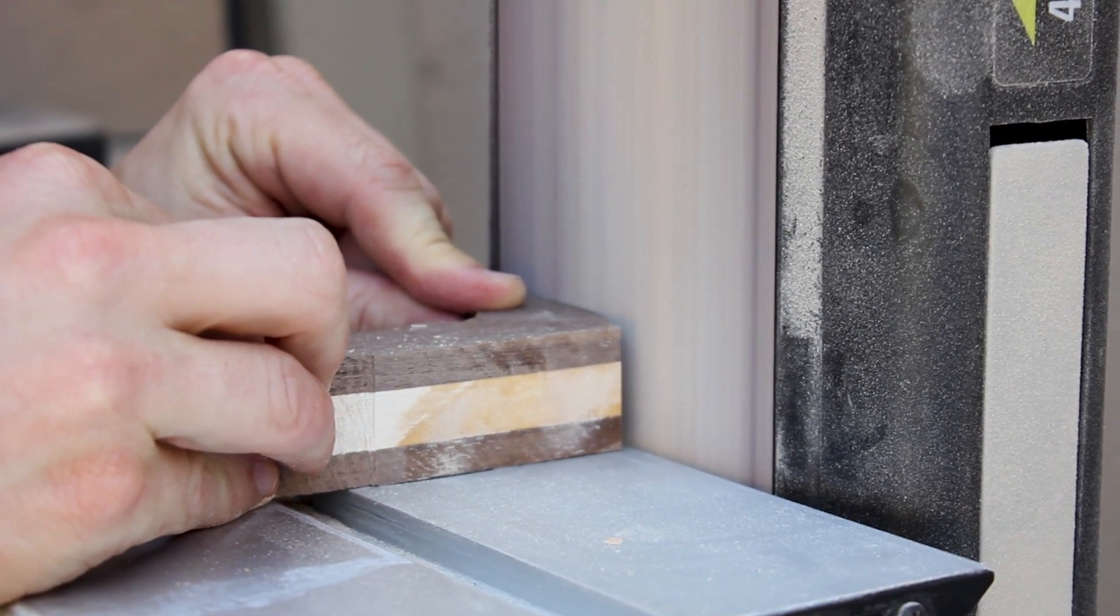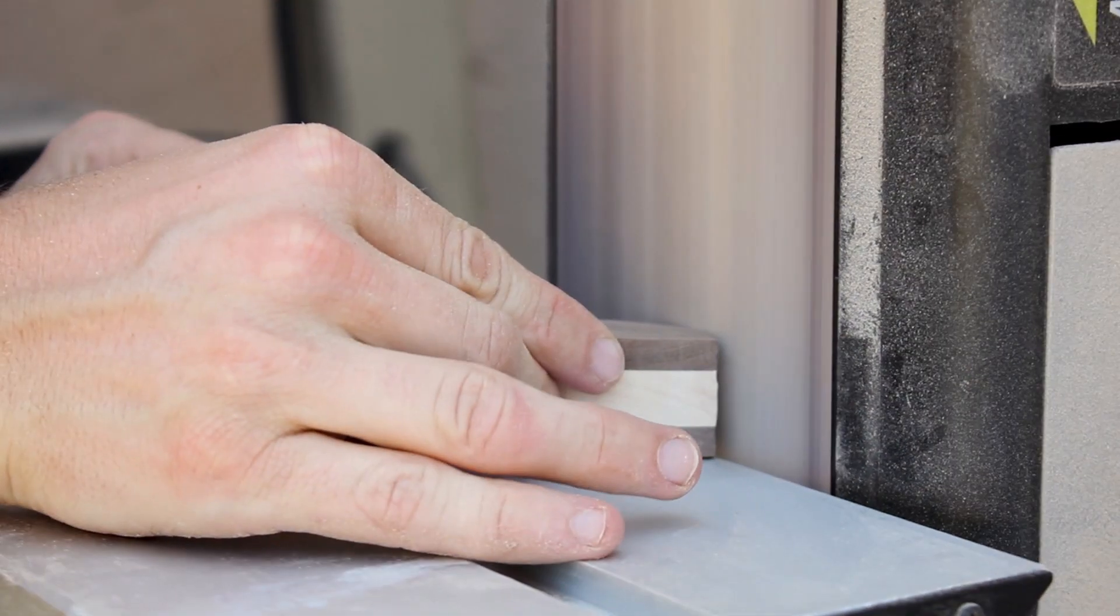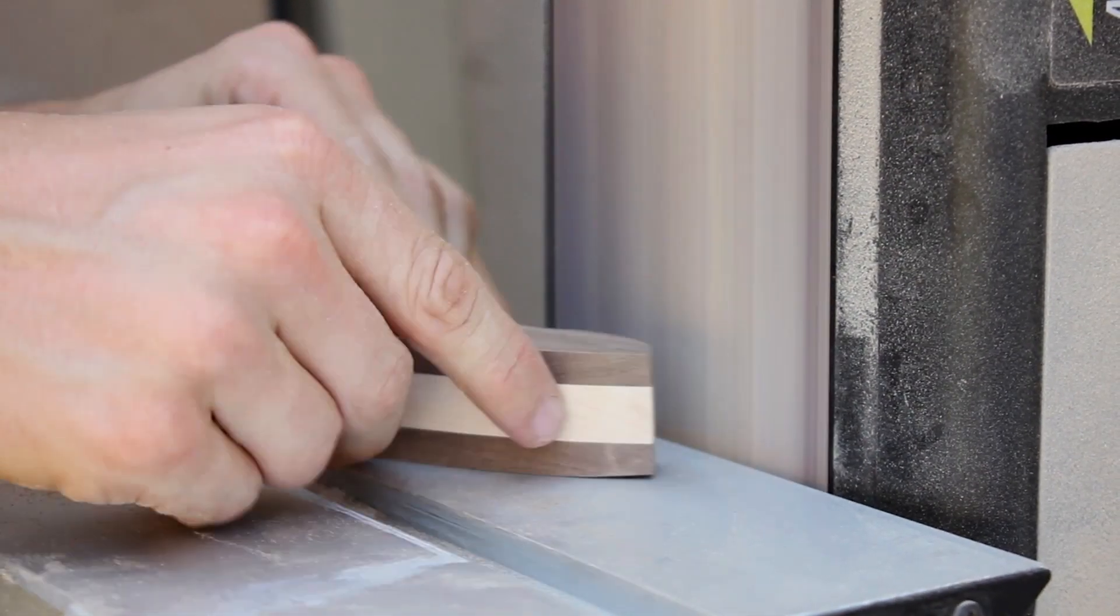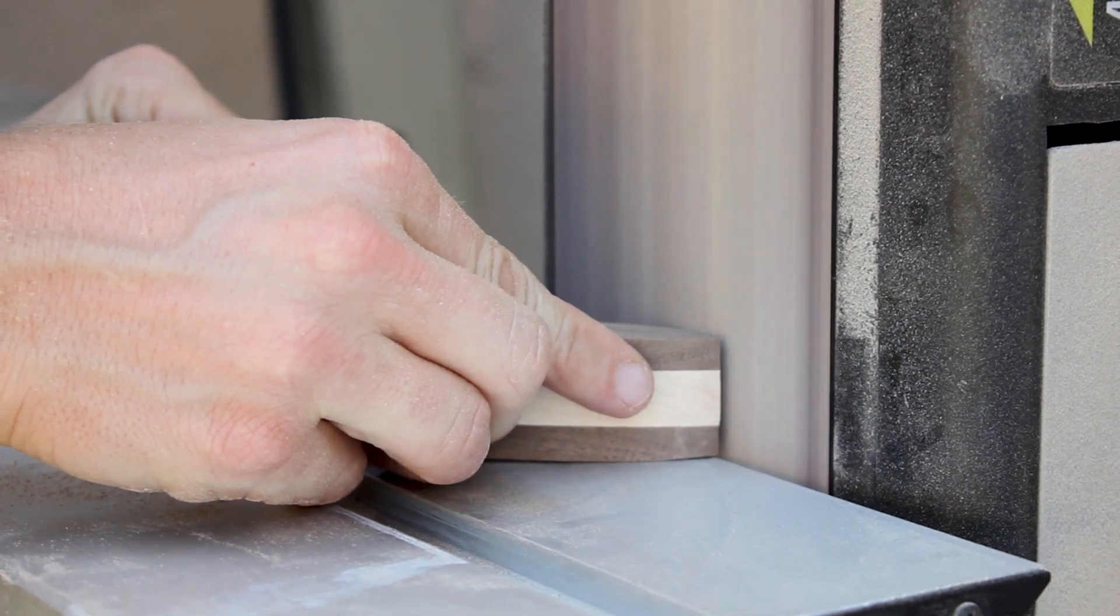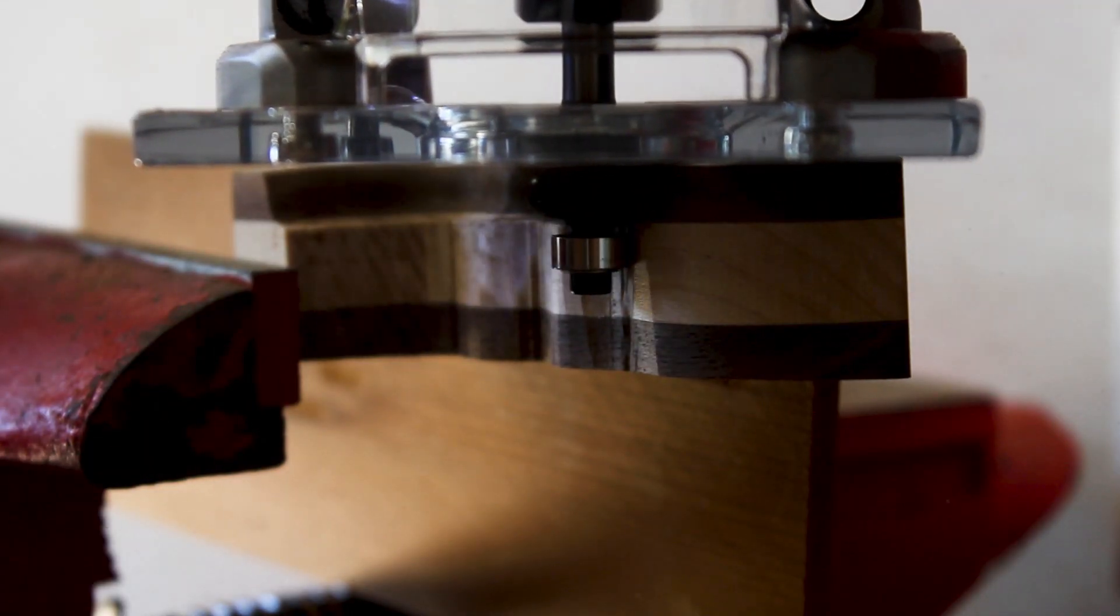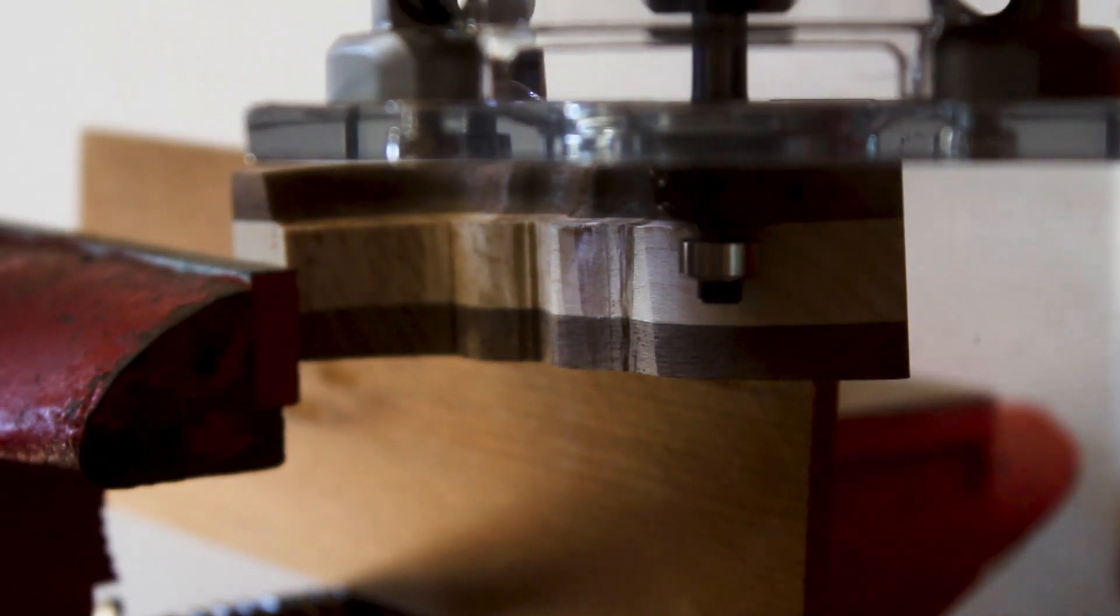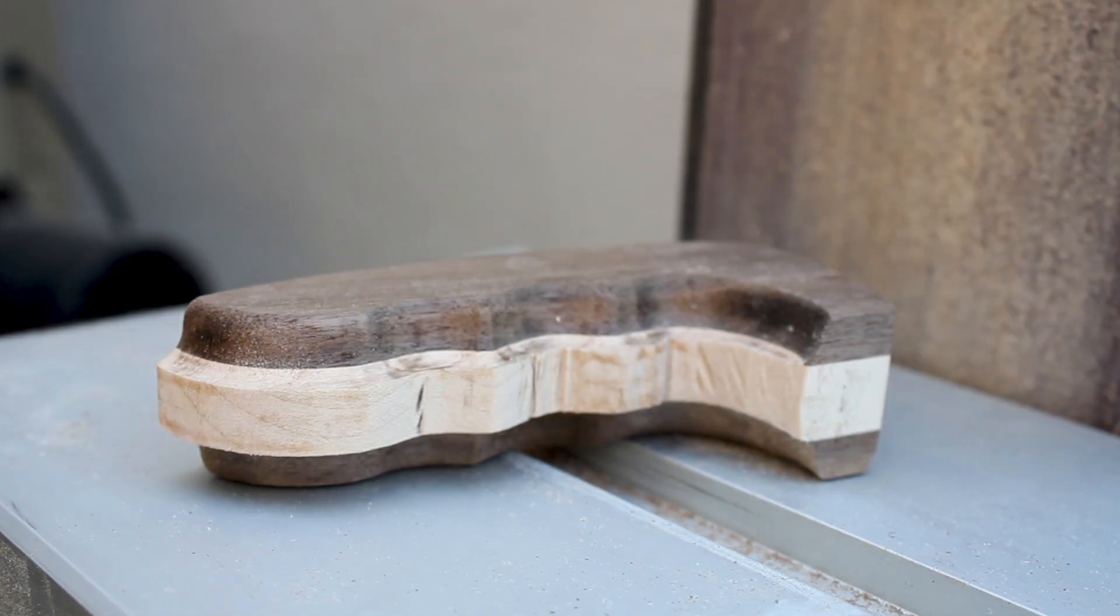Next, I smoothed over as many surfaces as I could on my belt sander. I then clamped my piece inside a vise and used a router bit to give the underside of it a cool profile.